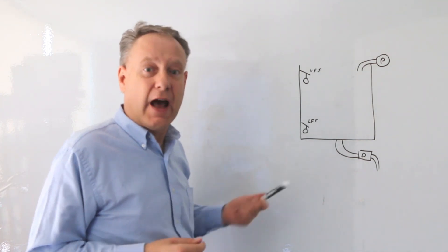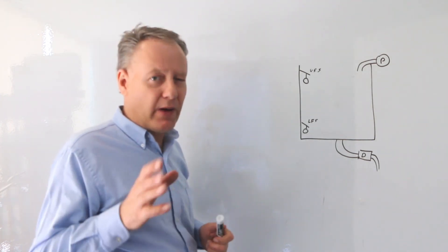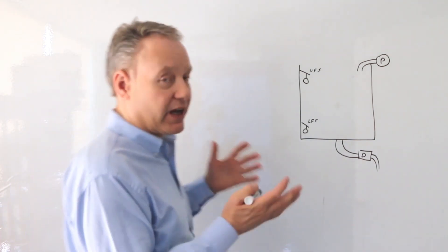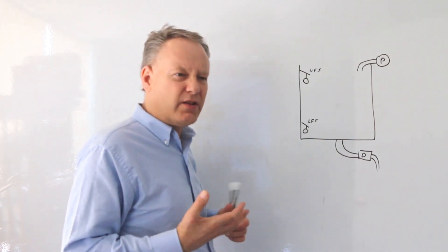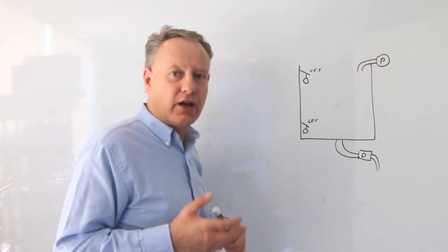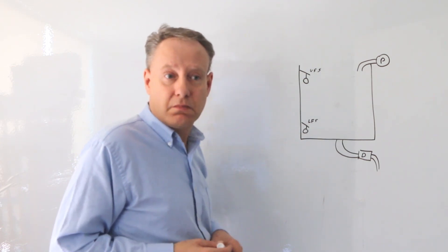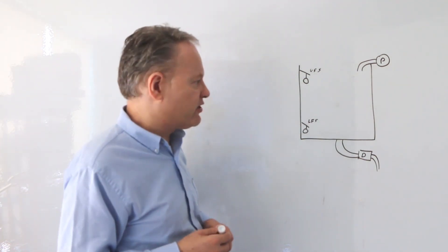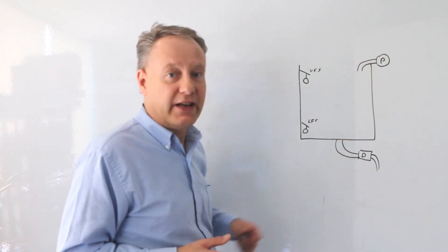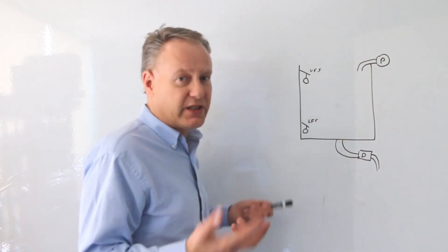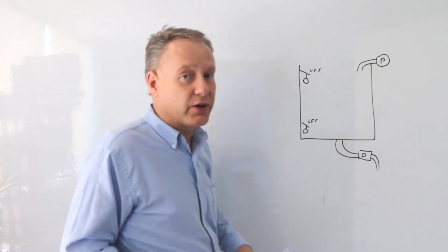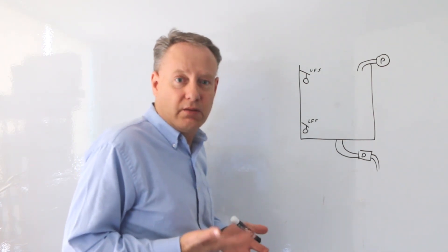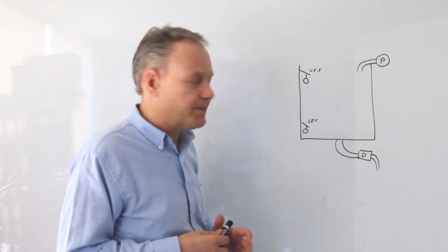Let's see a holding circuit in application. We've got an application where we have a tank we're filling automatically. When it gets empty it fills, when it gets full it stops filling, and then vice versa it goes back and forth. Maybe someone's controlling the drain — they press a button, activate the drain, and the liquid goes out. For now, we want to design a circuit that just keeps the tank full.